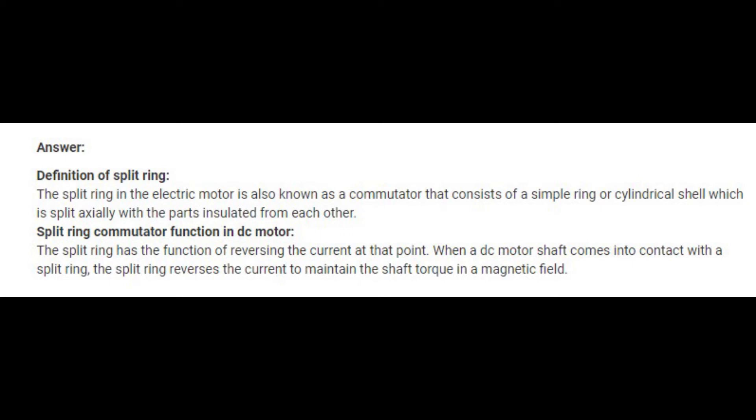The split ring has the function of reversing the current at that point. When a DC motor shaft comes into contact with a split ring, the split ring reverses the current to maintain the shaft torque in a magnetic field.